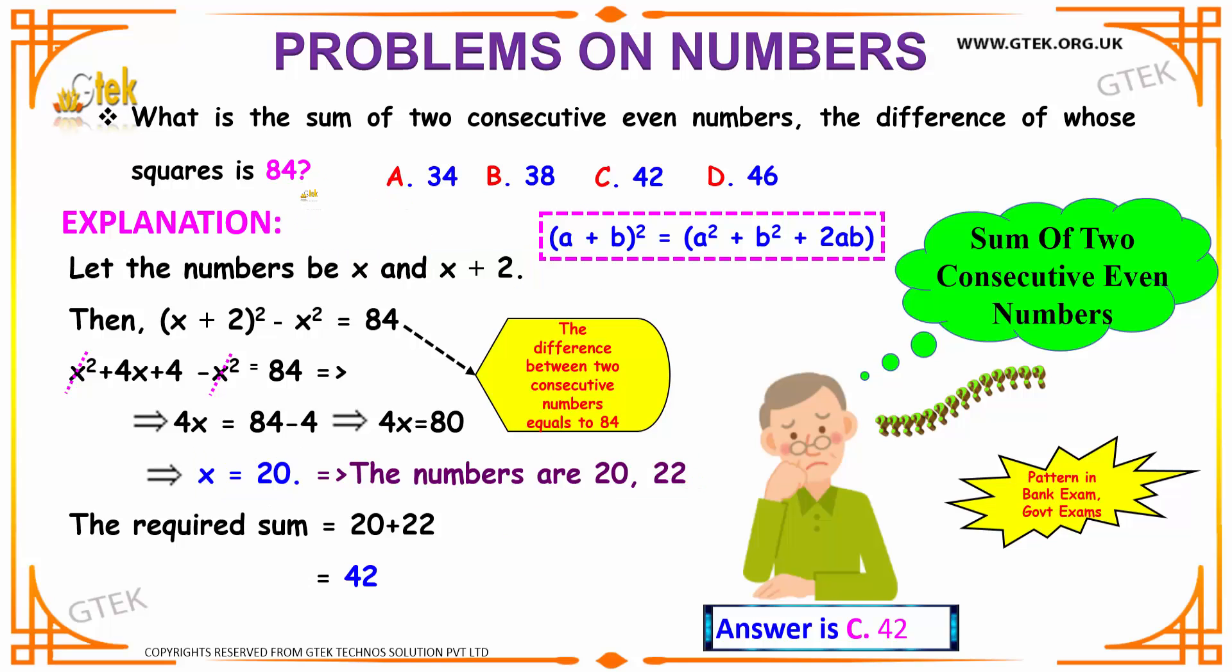What is required is that we have to find the sum of two consecutive even numbers. So to find the sum, we have to add 20 and 22. That is nothing but 42 which is option c.